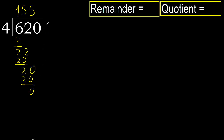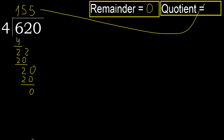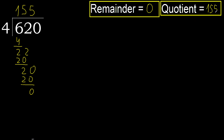Next — there is no more number, therefore finish. 620 divided by 4 is 155. Ok.